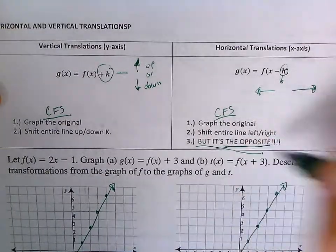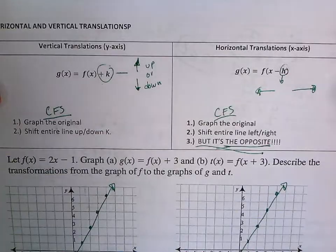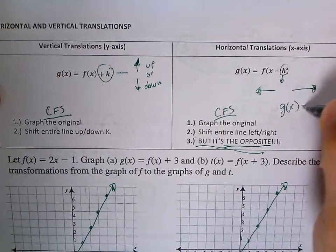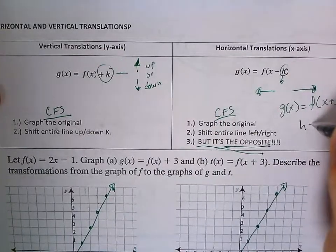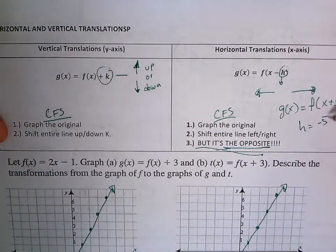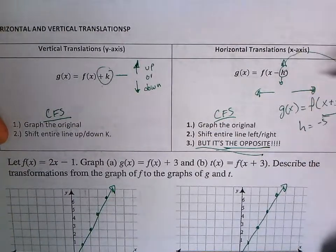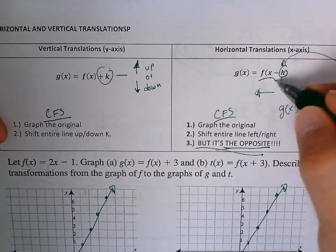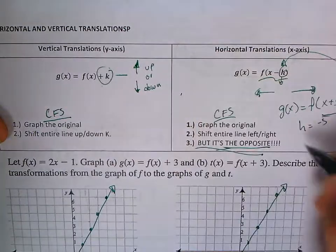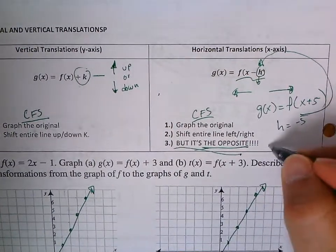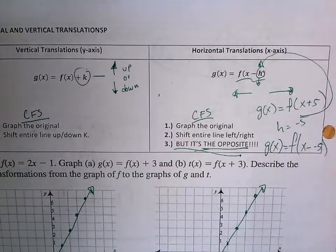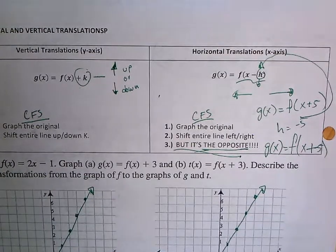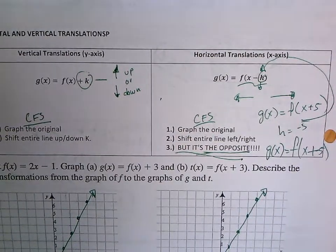For example, if I had a function g of x equal to f of x plus 5, the value of h is actually negative 5. If I plug in negative 5 into h, notice the equation already comes with a negative. So g of x equals f of x minus negative 5 — because I have two minuses, that becomes positive. That's why h is always the opposite of what you see.